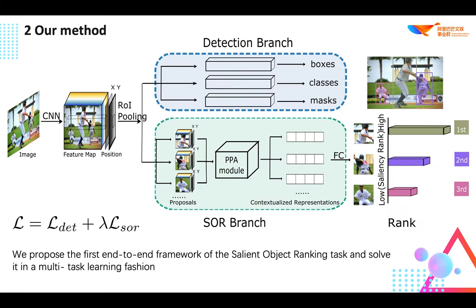The overall network architecture is shown below. The framework is composed of three components. First, the backbone: a commonly used CNN network is applied as a feature extractor. The input is a raw image, while the output is a feature map. ROI pooling operation is applied to crop object-level features of each proposal. Second, the detection branch: off-the-shelf detection methods can be used here. The target of this branch is to detect objects and predict their locations, classes, and masks.